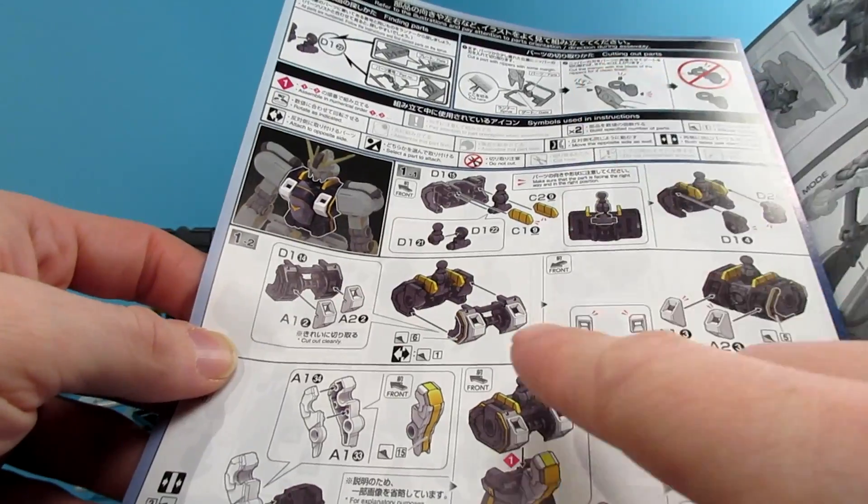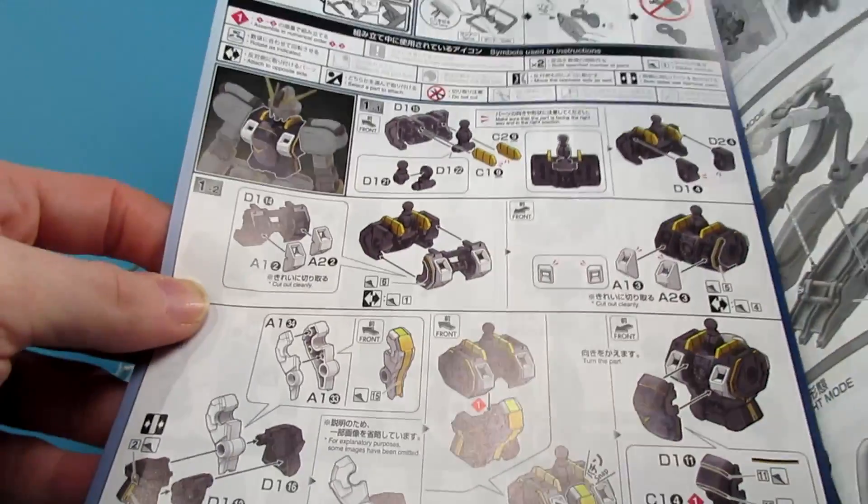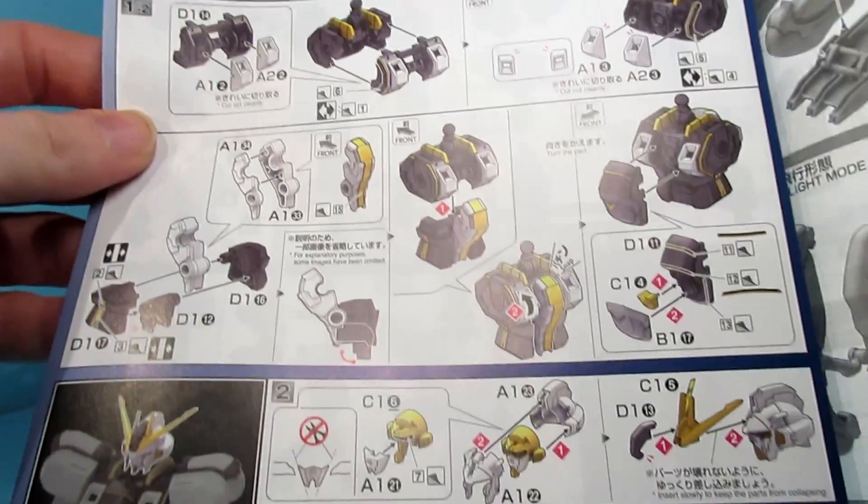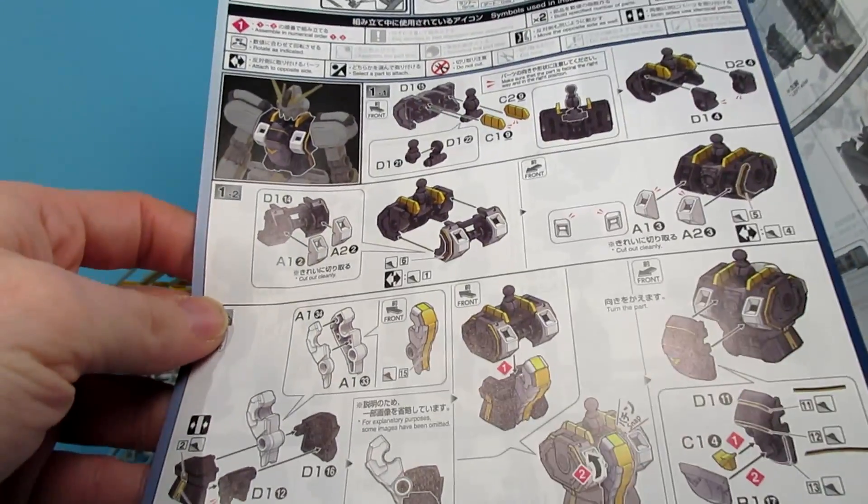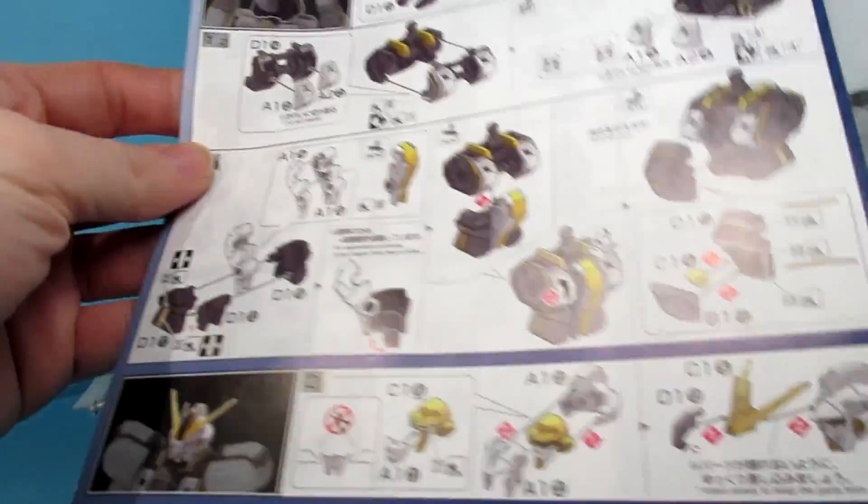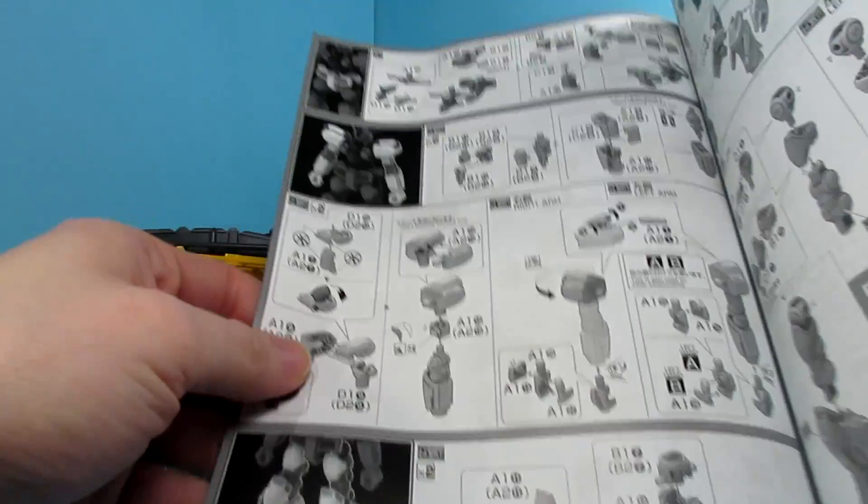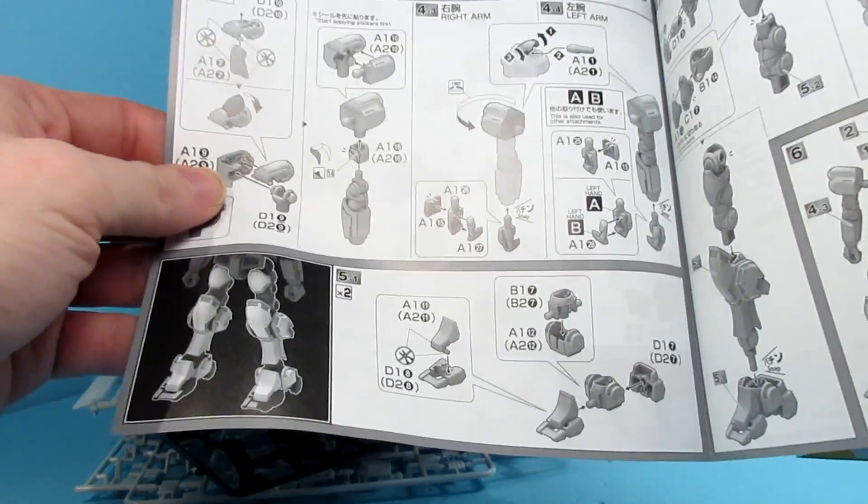And this is a first, I believe, where a high grade actually has a color page for the first page. That's really different. Because they really want to show off the torso there and the head. Because after that, it's back to black and white and gray all over.